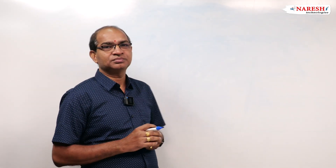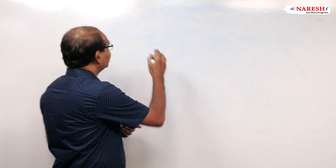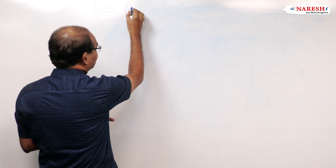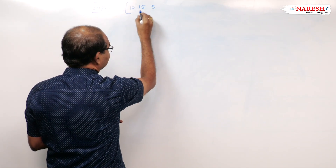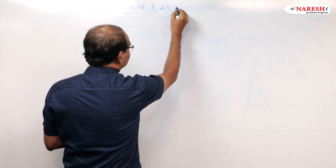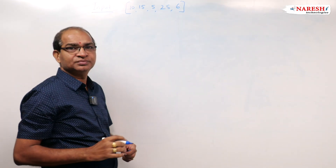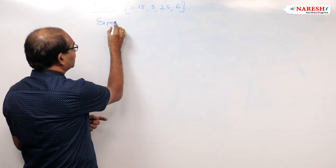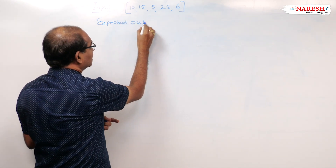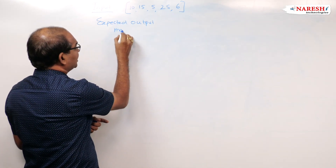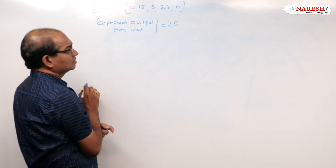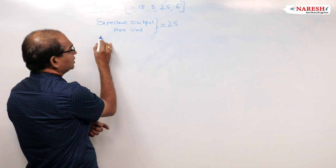Let us consider the expected input and expected output. We are taking input as a list of values: 10, 15, 5, 25, and 6. These are my list of values. I want to find the maximum value — the expected output is max, which is 25.